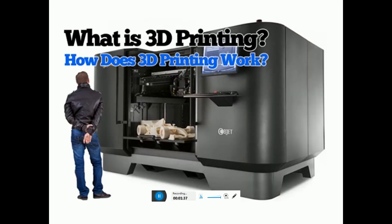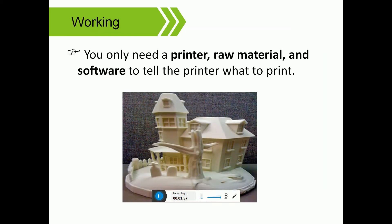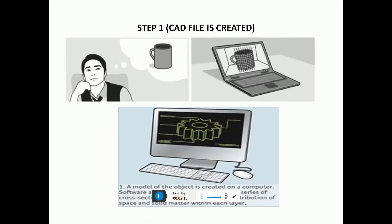A 3D printer is a manufacturing device. It is a method of converting a visual 3D model into a physical object. 3D objects are created by laying down successive layers of material. You only need to start the process — layer after layer is coated and deposited automatically. Resin is applied border layer by border layer, and then another layer is added until the complete model is finished.